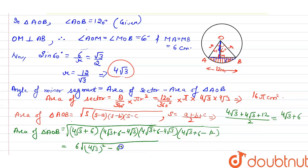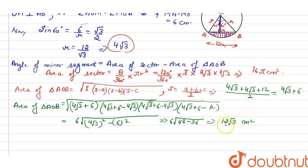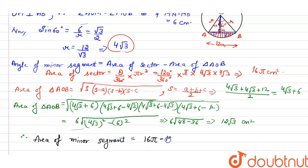This gives us √(6 × ((4√3)² − 6²)) = 6√(48 − 36) = 6√(36·3 − 36) ... simplifying to 12√3 cm². Therefore, area of minor segment equals 16π − 12√3, which equals 4(4π − 3√3) cm². This is the answer.